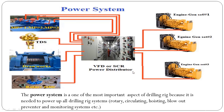The maximum power required on the rig will be when we go for backream reaming. In this scenario, while backream reaming, we will be rotating the string with the TDS, meanwhile with the draw works we will be performing the hoisting operation as well, and the mud pump will also be running for circulation. This is the case on the rig when we will have maximum power required.